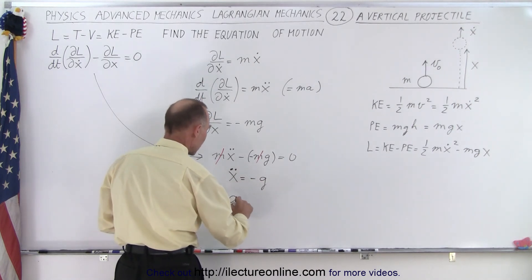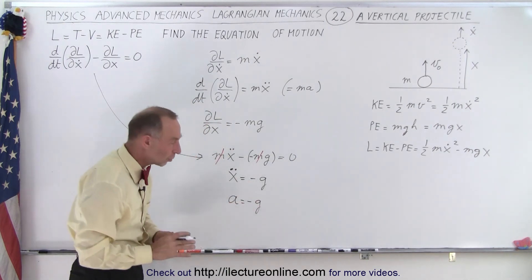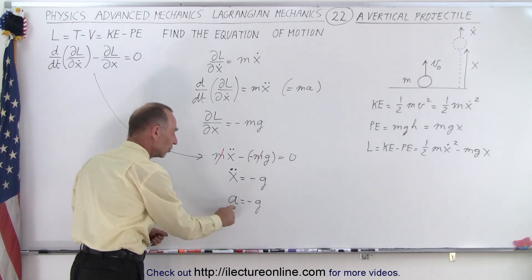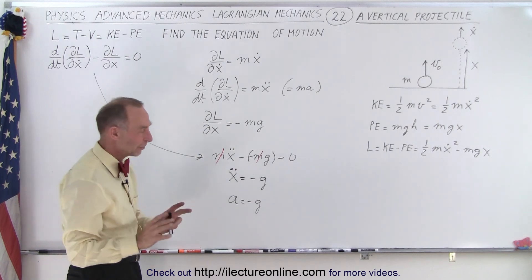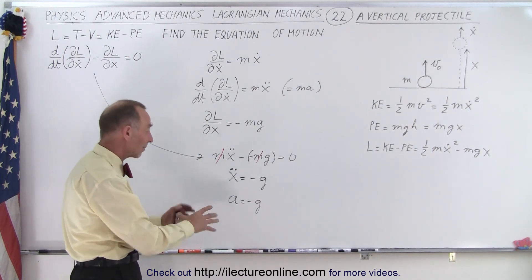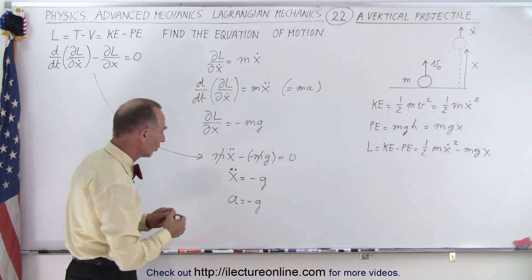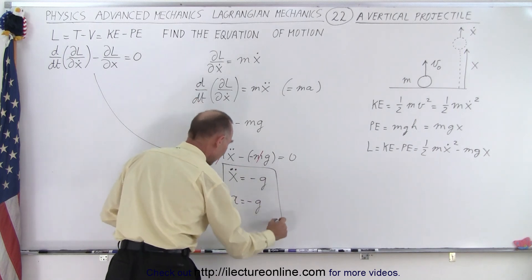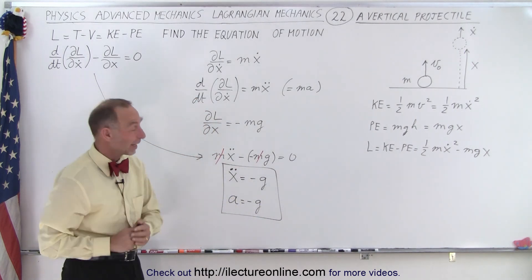In other words, a equals minus g. Now, g is the magnitude of the acceleration — the negative is the direction. So the acceleration is negative g. Be careful: that's not negative times negative 9.8; that's negative times positive 9.8. And that is the solution, or the equation of motion, for that particular projectile. And that is how it's done.